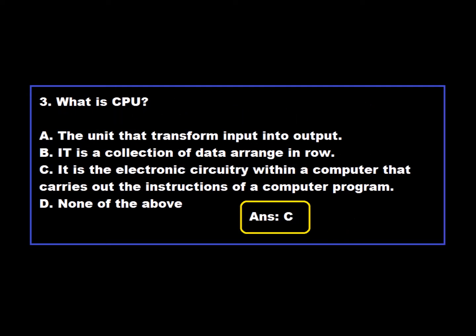Question 3: What is a CPU? Option A: The unit that transforms input into output. Option B: It is a collection of data arranged in rows. Option C: It is the electronic circuitry within a computer that carries out the instructions of a computer program. Option D: None of the above. Option C is correct — the CPU is the electronic circuitry within a computer that carries out the instructions of a computer program.